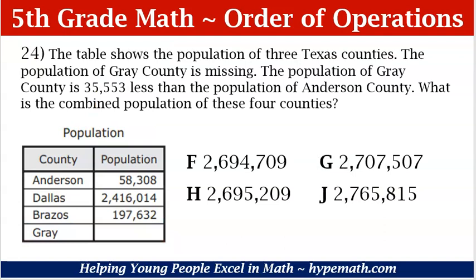Let's get started with problem number 24. The table shows the population of 3 Texas counties. The population of Gray County is missing. The population of Gray County is 35,553 less than the population of Anderson County. What is the combined population of these 4 counties?